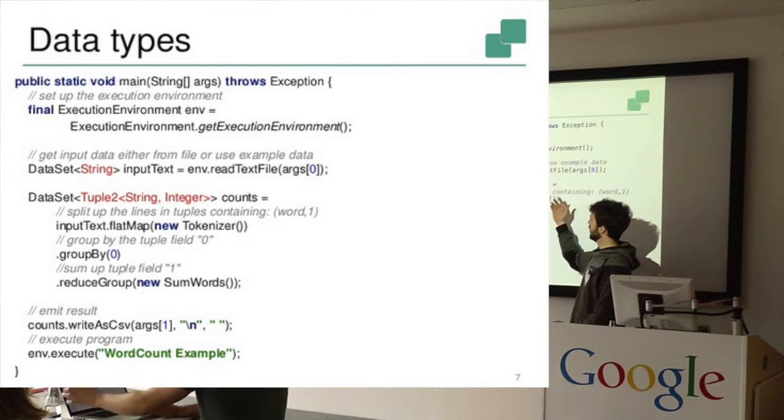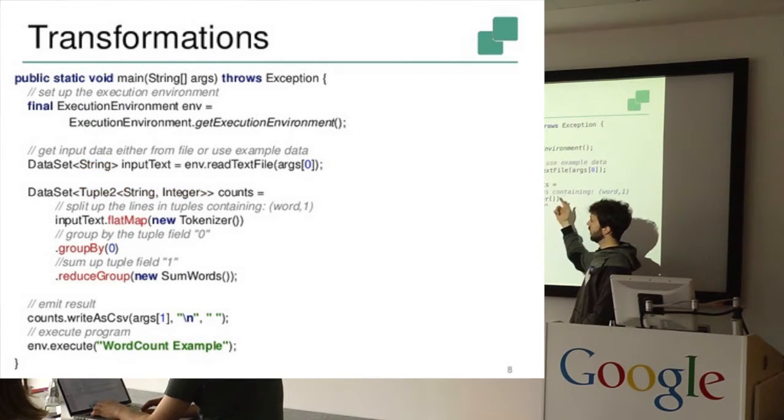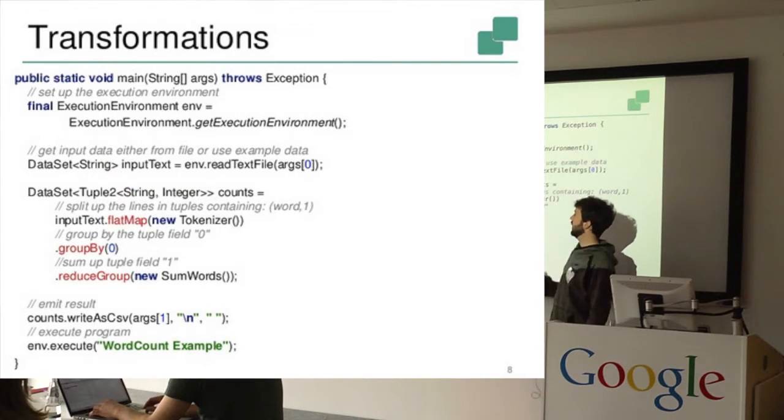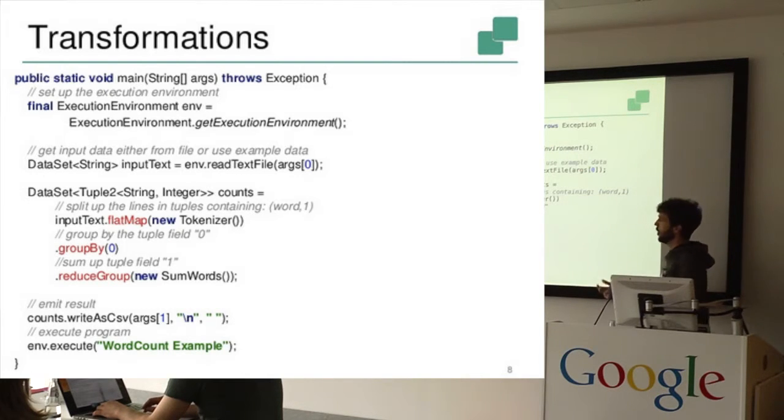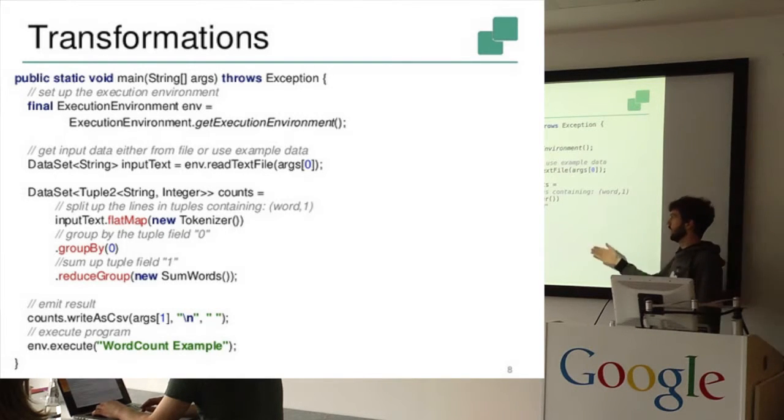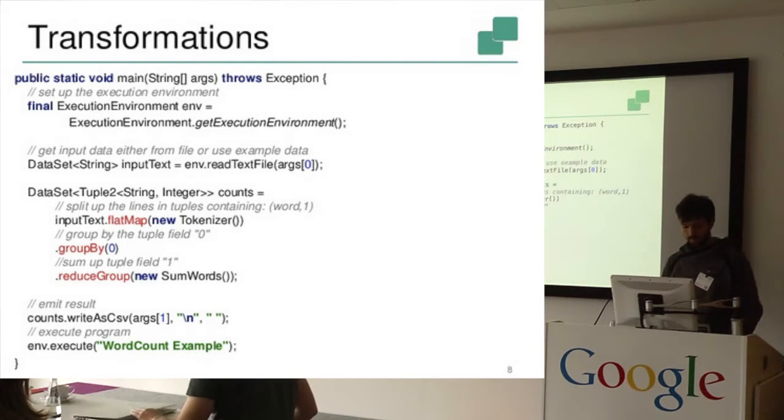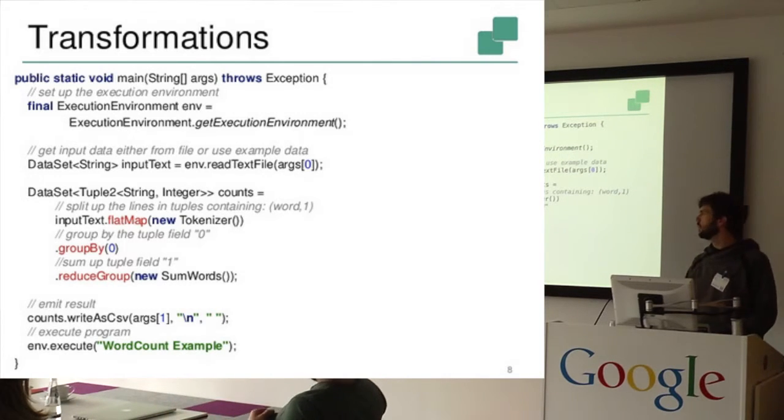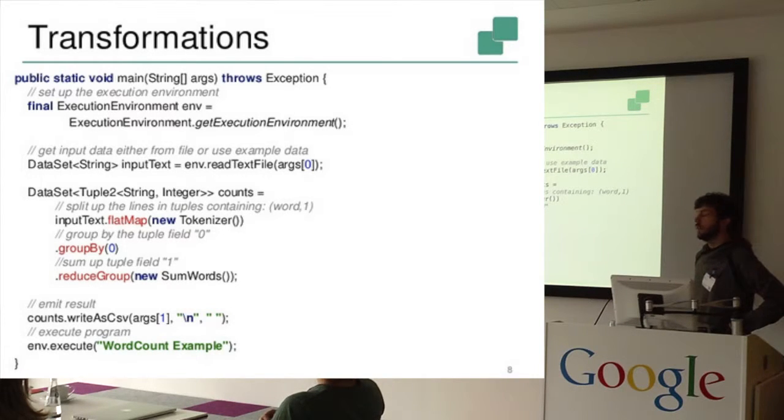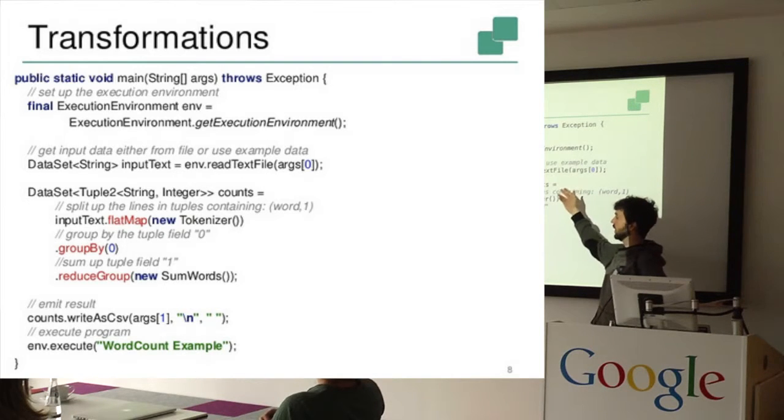So every time you execute an operation on a Dataset, here for example the input Dataset, and you execute a flat map or group by or reduce group, it returns a new Dataset, and you can store this new Dataset in a variable. So I think everyone of you is probably familiar with WordCount. Basically what this does is read from a text file a sequence of words, then it has these words in a Dataset.